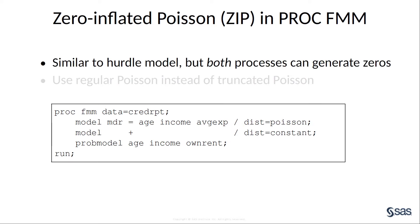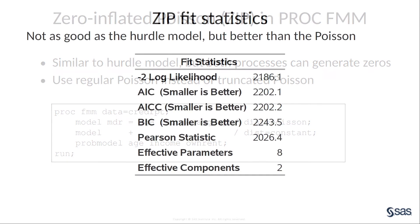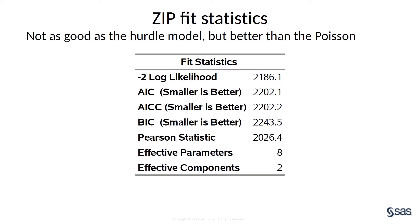You can also fit a zero inflated Poisson, or ZIP, model by using PROC FMM. The ZIP is like a hurdle model, but both components can generate zero counts. The difference is that the first component is a regular Poisson model, as compared to the hurdle model, which used a truncated Poisson. Once again, you can look at the fit statistics to assess how well this model is doing. This is still better than the Poisson, but it's not quite as good as the hurdle model.